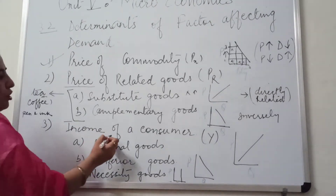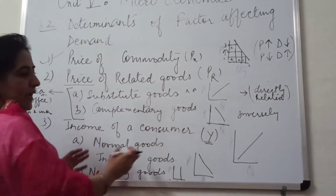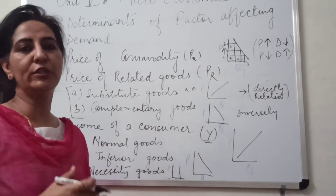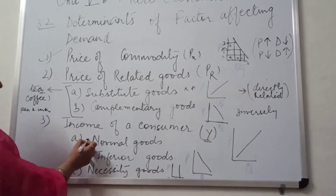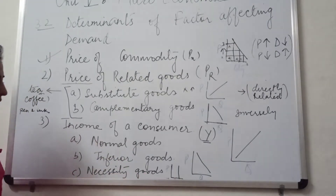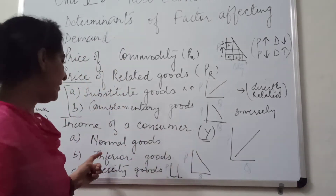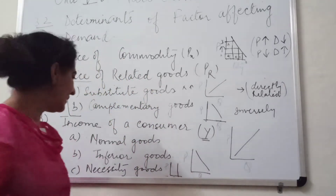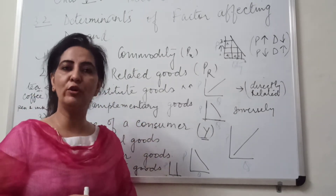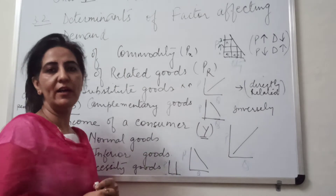The third factor is income of a consumer, denoted by Y. Income is the money which a person earns to spend on purchasing goods and services. There are three types of goods: normal goods, inferior goods, and necessity goods. We will understand this with the help of a diagram.